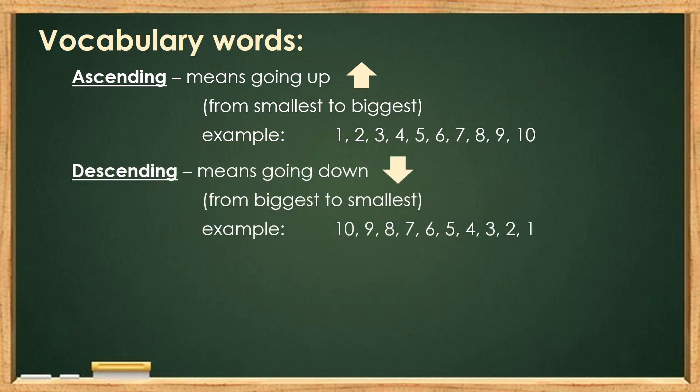Descending means going down. In descending order, we have to start from the biggest number up to the smallest number. For example, we will start from the number 10 going to number 1.